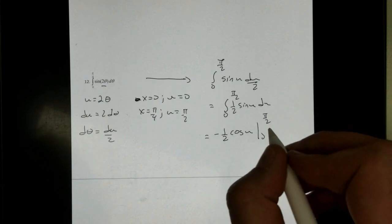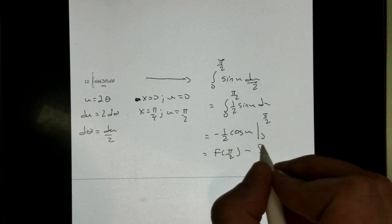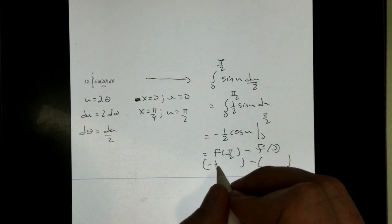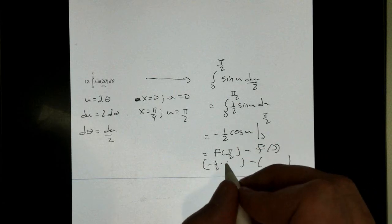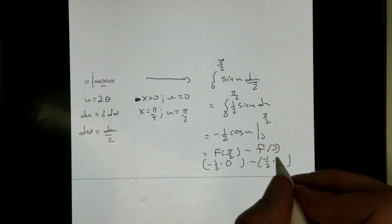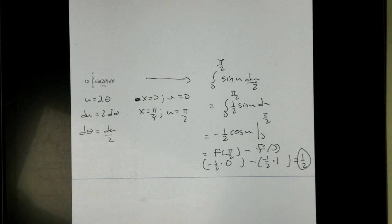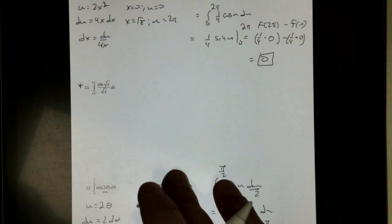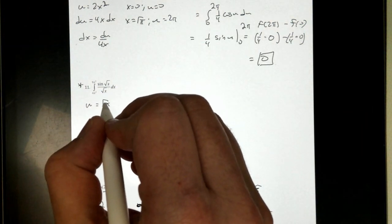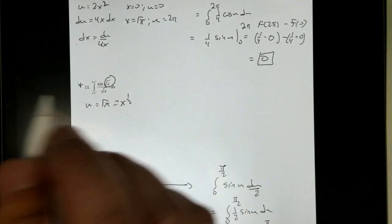Using the fundamental theorem, f of pi over 2 minus f of 0, and again, do the trig in your head, we get negative one half. What's the cosine of pi over 2? That's just 0. This becomes negative one half. What's the cosine of 0? 1. So if you want to, this is just one half for your final answer. Now I will give you a hint for number 11. Let u be the root x. This one, that's my inside, which is x to the one half. And that should work for you.